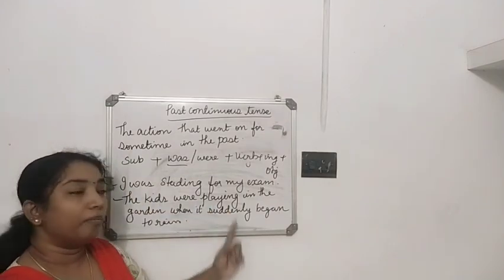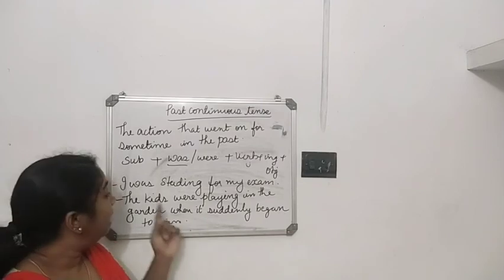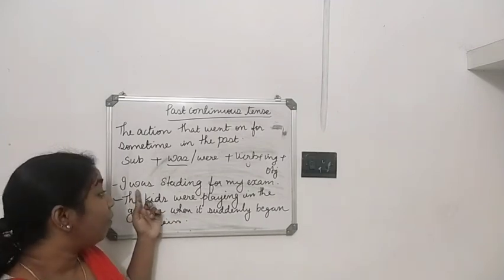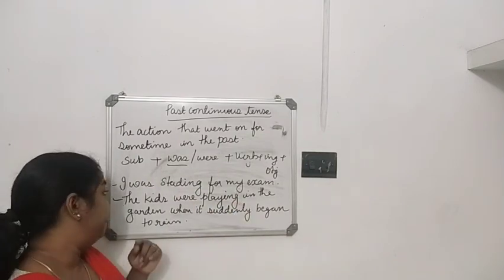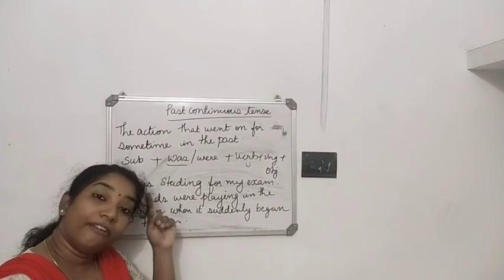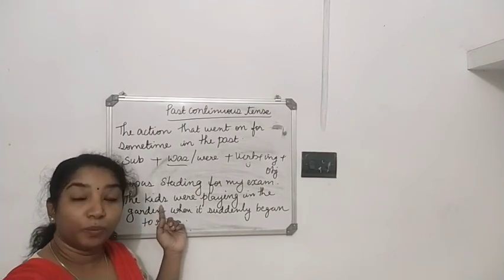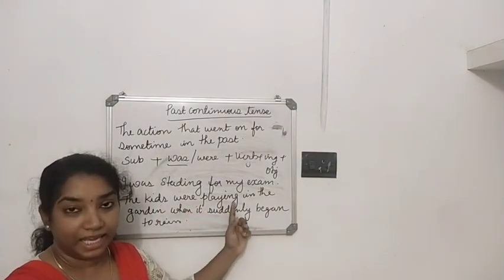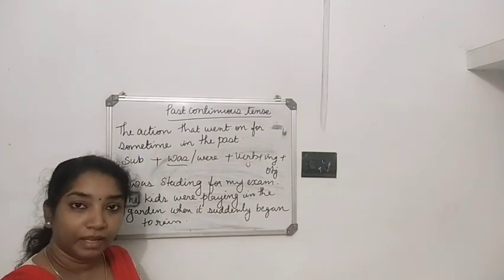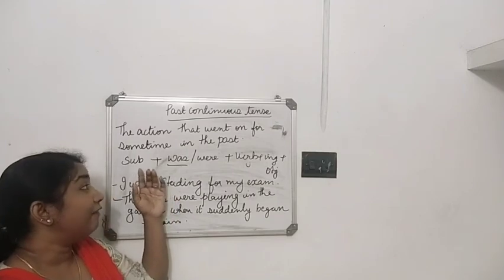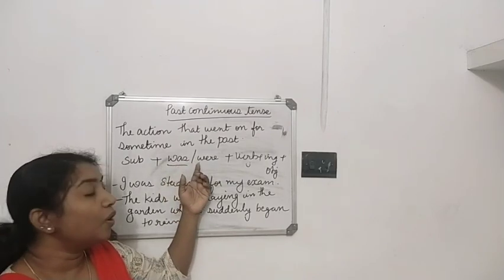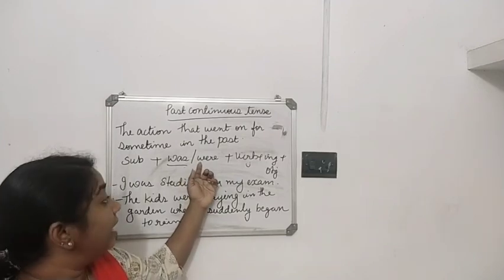Now look here: 'I was studying for my exam.' I was studying — I is singular so we have to use 'was.' I was studying for my exam. 'The kids were playing in the garden when it suddenly began to rain.' Kids is plural form, so we have to use 'were.' Kids were playing. So in past continuous tense: subject plus was or were — was with singular, were with plural — plus verb plus ING.